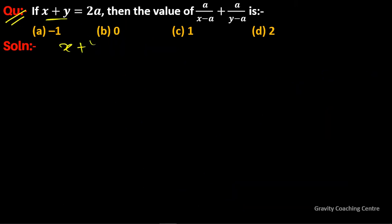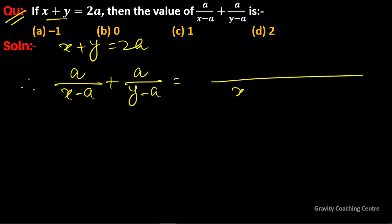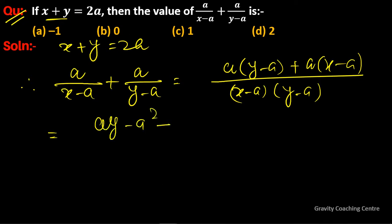Now solving by the second method. Given x plus y equals 2a, therefore a upon x minus a plus a upon y minus a. Now we take the LCM: a times y minus a plus a times x minus a, which equals ay minus a squared plus ax minus a squared upon x minus a times y minus a.